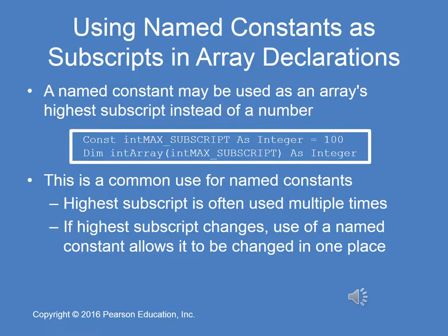You can use a named constant but not a variable that can change — it has to be a constant. You can use a constant as the highest subscript instead of a hard-coded number. This is common, especially if the highest subscript is used multiple times. If the highest subscript for this application changes, you change the constant once and then the size of the array changes throughout the program. You cannot use a regular variable name such as an integer — it will not work because you cannot change that at runtime. It has to be a constant or a hard-coded integer value.